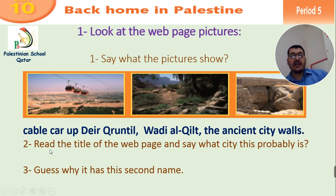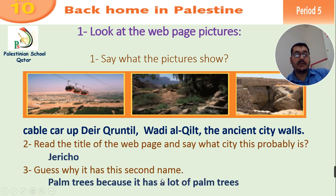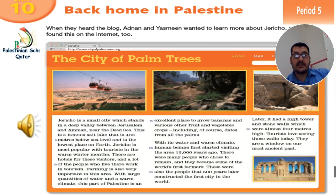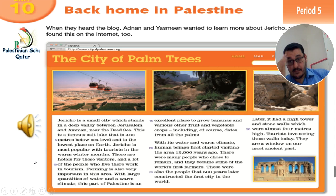Now, number two: read the title of the page and say what city this probably is. Which city are we talking about? It is Jericho. And why do we call it by the second name? We guess it has the second name 'palm tree' because it has a lot of palm trees, or they planted a lot of palm trees. Now we come to our lesson: The City of Palm Trees. Let's listen to the passage — period five, activity three.